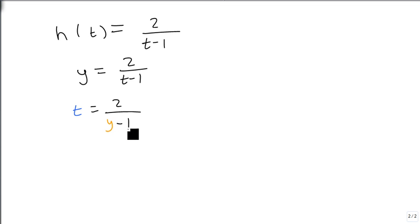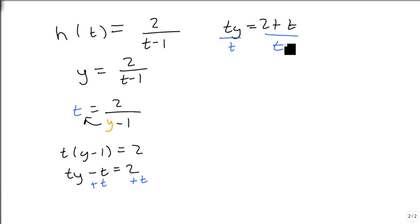Now the problem is the y minus 1 is on the bottom. So what we have to do first is multiply it up. So we're going to get t times y minus 1 equals 2. Distribute the t. So ty minus t equals 2. We're now going to add t to both sides to get ty equals 2 plus t. Divide both sides by t. And we get our answer of y equals 2 plus t over t.